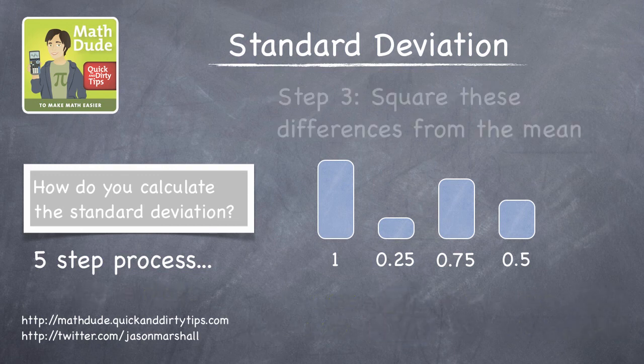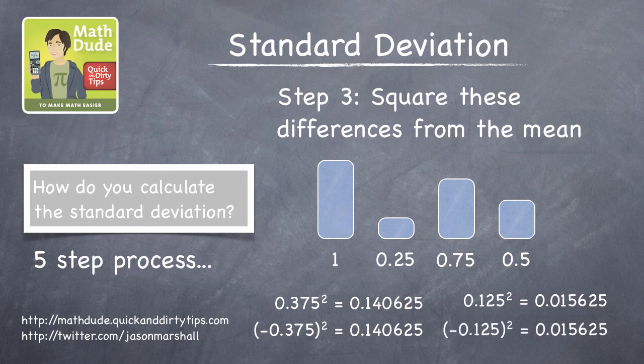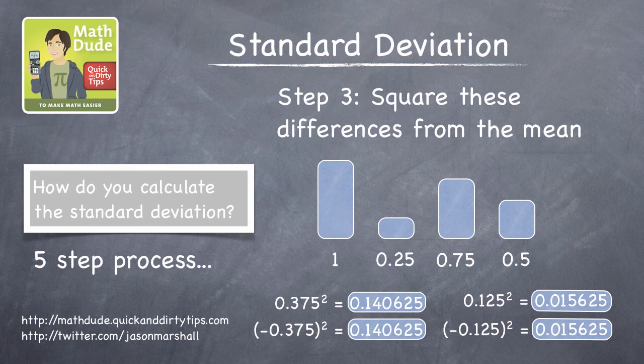Step three is to calculate the square of these differences from the mean. Notice that 0.375 squared and negative 0.375 squared have the same value, and the same is true for 0.125 squared and negative 0.125 squared.